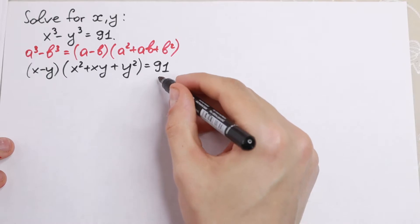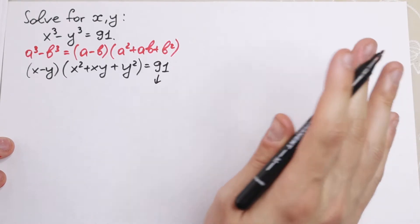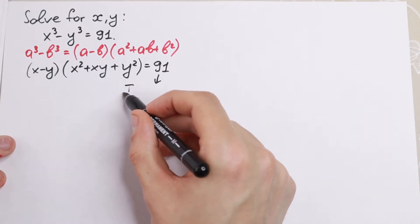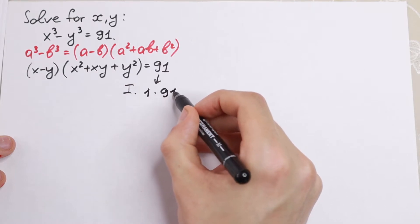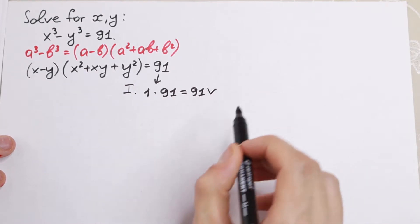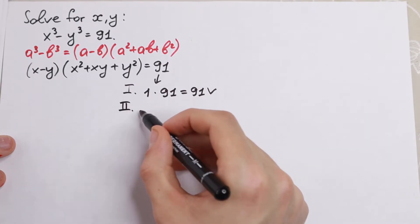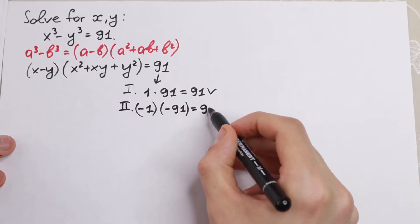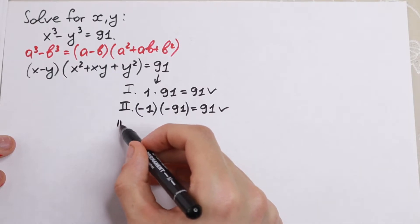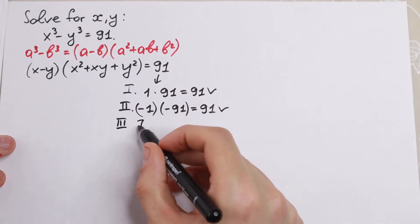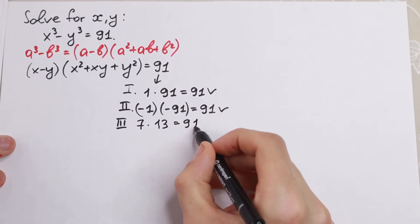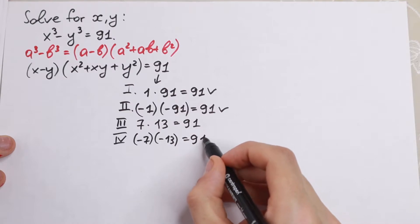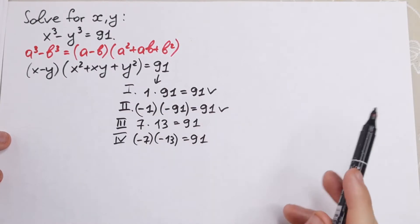We need to factor 91. We can write 91 in four cases: 1 times 91, minus 1 times minus 91, 7 times 13, and minus 7 times minus 13 — all equal to 91.